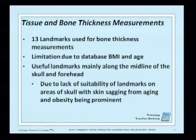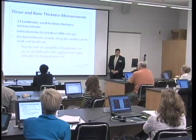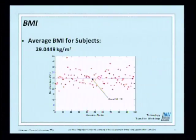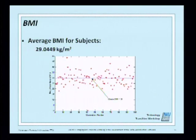Useful landmarks were mainly along the midline of the skull and forehead. Some older patients showed sagging due to age, so we avoided landmarks affected by this. The average BMI in our dataset was 29, which was high, but also beneficial for comparison. The 13 measurements include superglabella, glabella, and other well-known landmarks. Five selected measurements were also conducted on segmented surface models — including Nasion, orbit height, and nasal breadth.